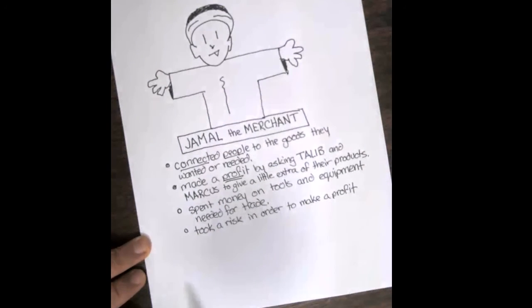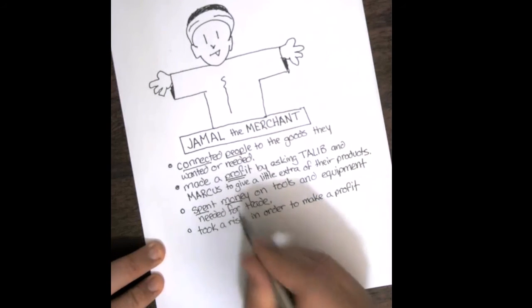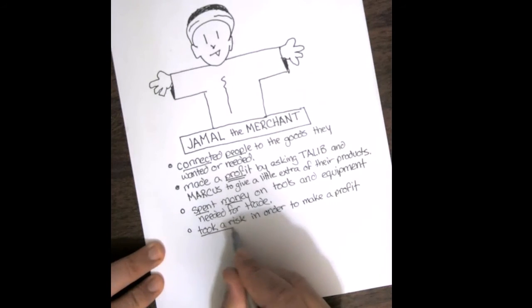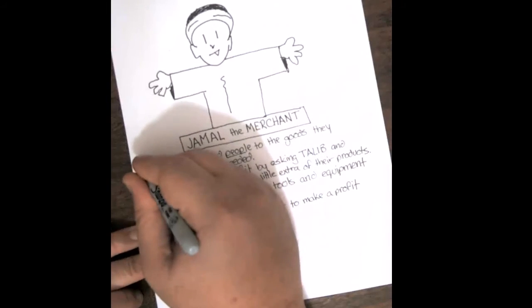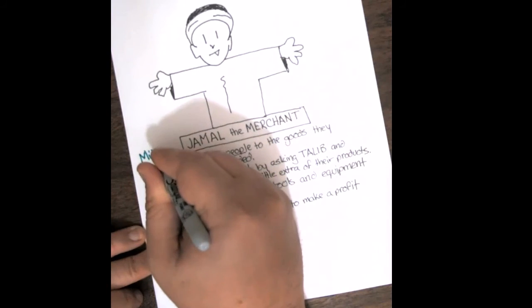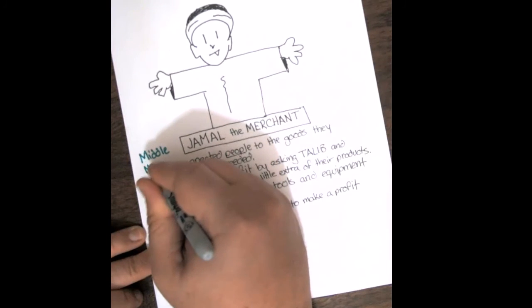So what he does is connecting people, makes a profit, spends money, and takes a risk. So what does this mean? He connects people. Jamal, that means Jamal the merchant, is a middle man. Jamal is the middle man. He is the man between Tlaib and Marcus, putting them together.